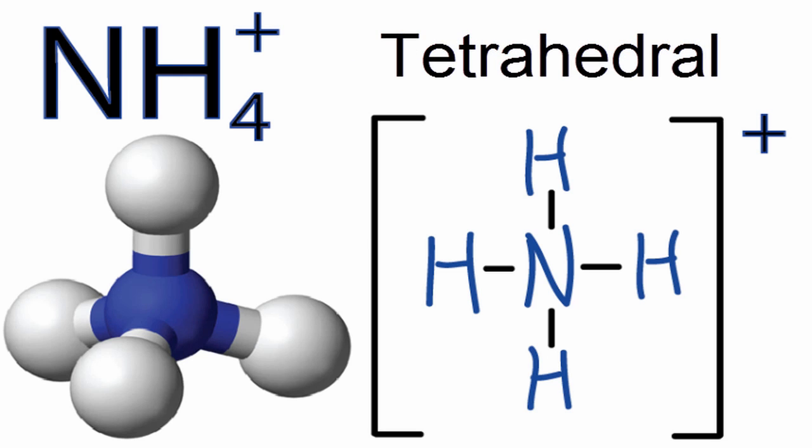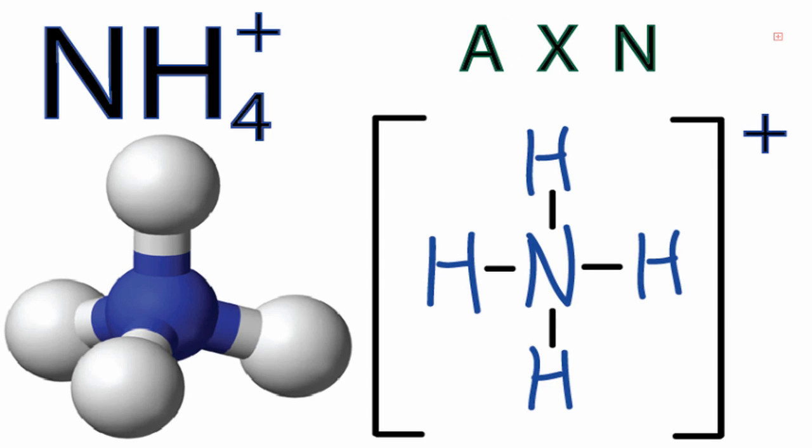We can also use the AXN notation to determine the molecular geometry for NH4+. A, that's the nitrogen. X, that's the number of atoms attached to the central nitrogen. We have four hydrogens, so we'll put a four there.